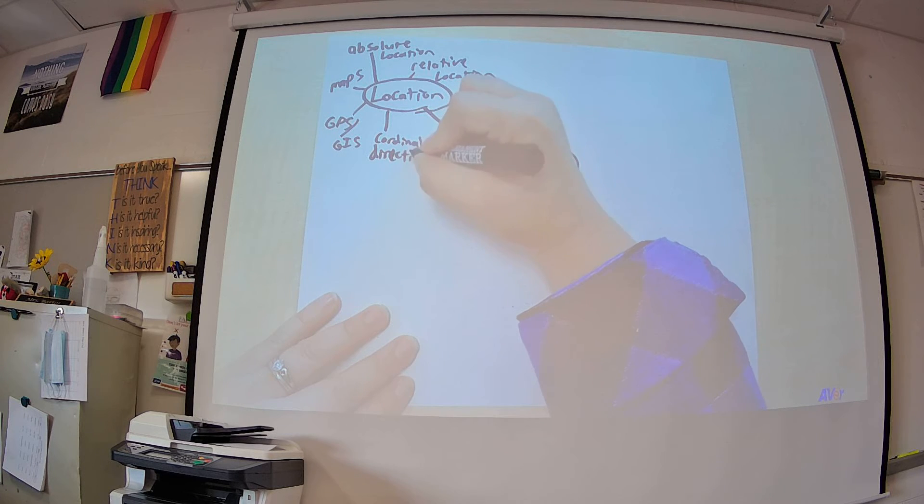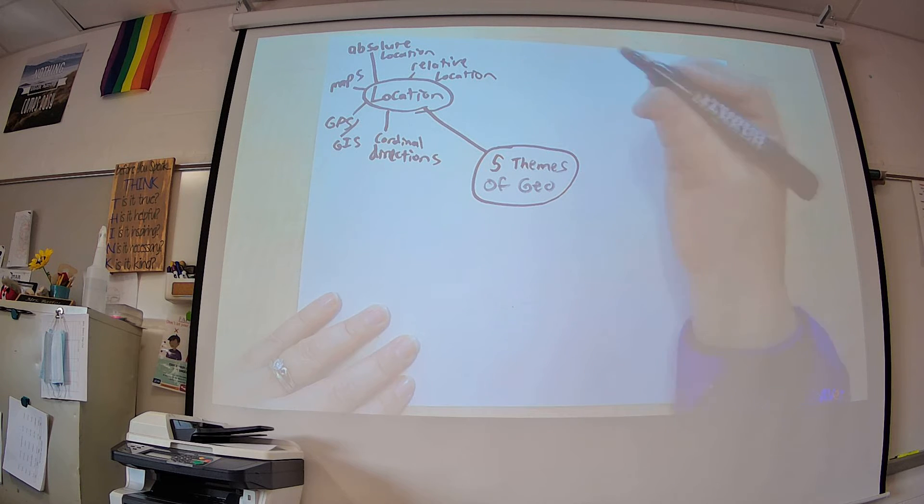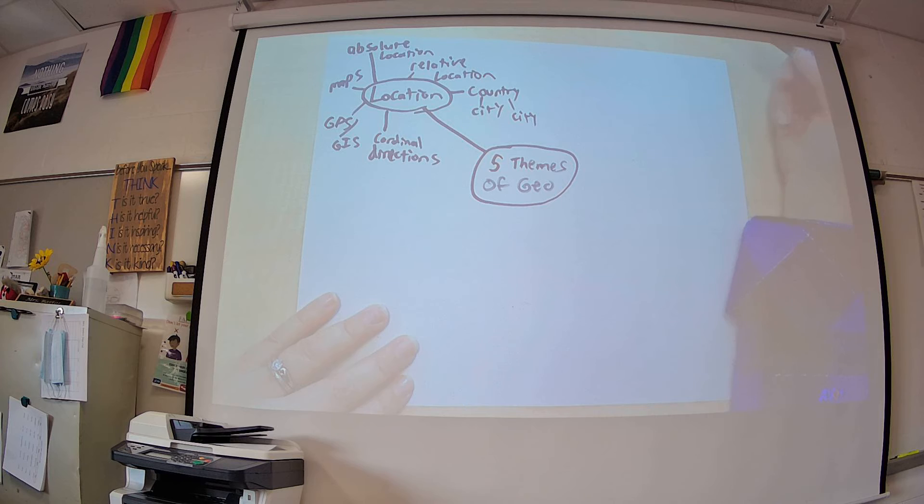We use cardinal directions to figure out where to tell people to go. So oftentimes when you're giving location, you're maybe explaining people living in a particular country, or city, or state, even. These are all considered examples of location because these are all things that are used to describe location.